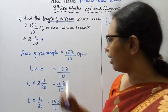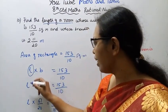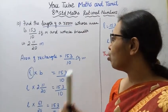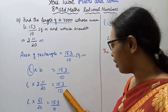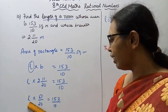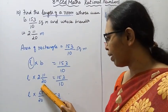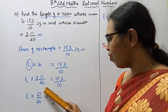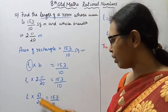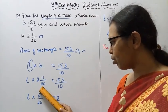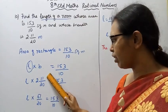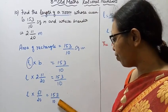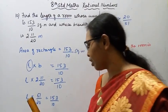Area of rectangle equals L into b equals 153 by 10. L into 2 11 by 20. Convert the breadth: 2 into 20 is 40, 40 plus 11 is 51 divided by 20.